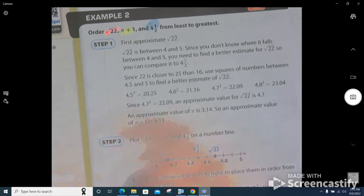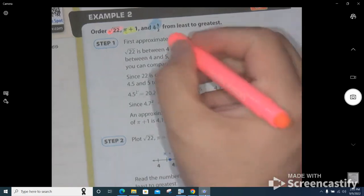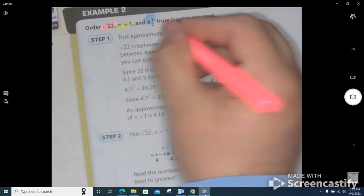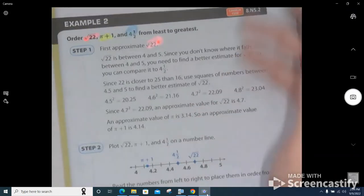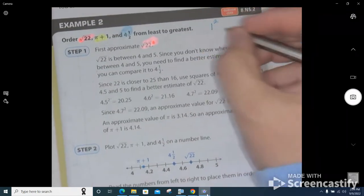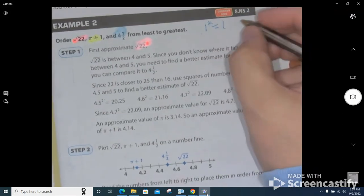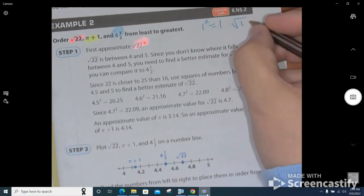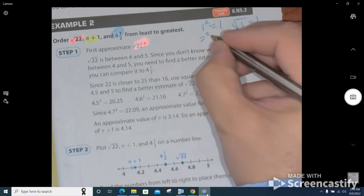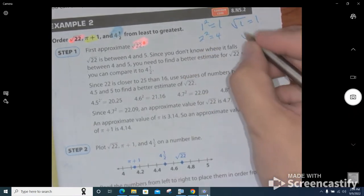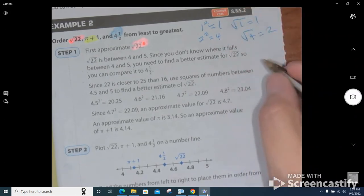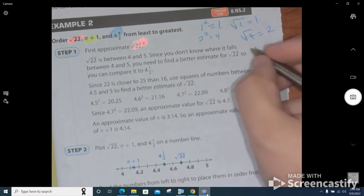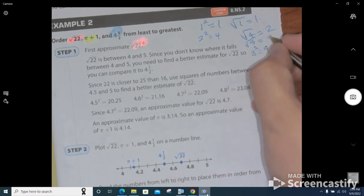Okay, so the first step is to approximate the square root of 22. So what you do is you start with one squared. I want you to write this down though. So 1² equals 1, which means the square root of 1 is 1. 2² equals 4, which means that the square root of 4 is equal to 2. 3² equals 9. So then that's the square root of 9 equals 3.